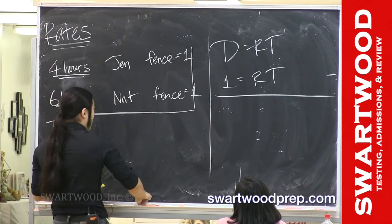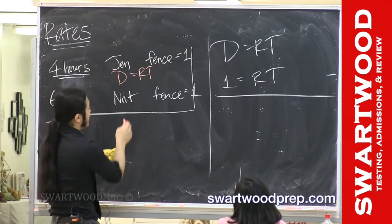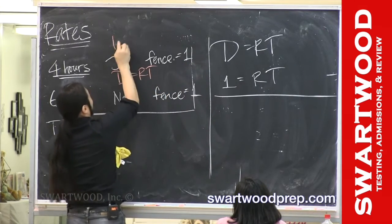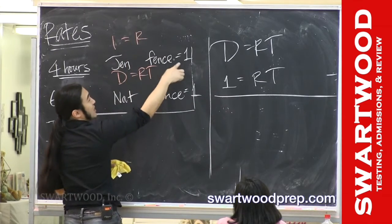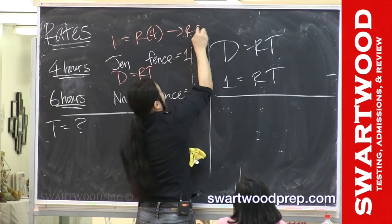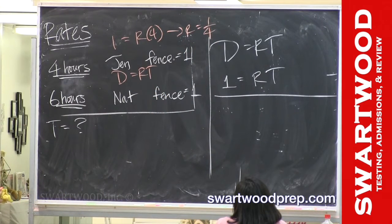Let's say orange for Jen. Distance is rate times time. The distance is going to be one fence. Let's do it up here. The rate we don't know, but how much time does it take her? Four hours. So the rate is one-fourth.